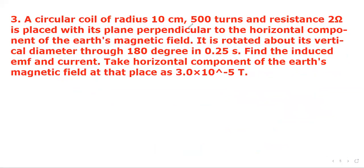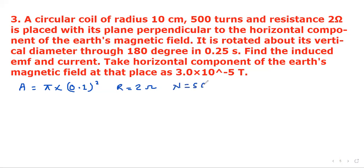Question 3: A circular wire of radius 10 cm with 500 turns and resistance 2 ohms is placed with its plane perpendicular to the horizontal component of Earth's magnetic field. It is rotated about its vertical diameter through 180 degrees in 0.25 seconds. Find the induced EMF and current. The horizontal component of Earth's magnetic field is 3 × 10⁻⁵ T. Area = π × (0.1)² m², resistance = 2 Ω, number of turns = 500, time = 0.25 s.